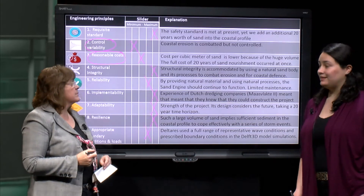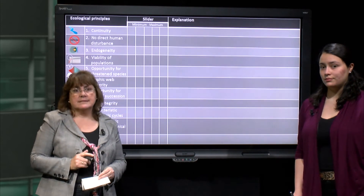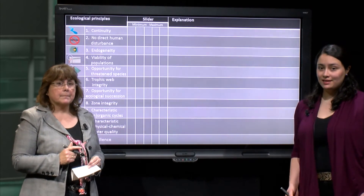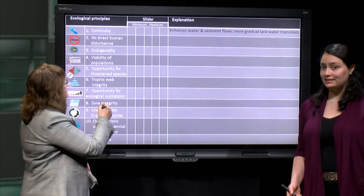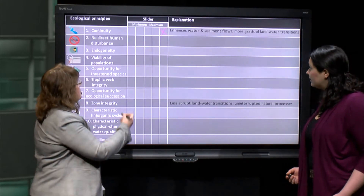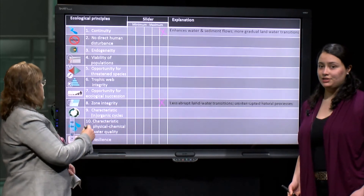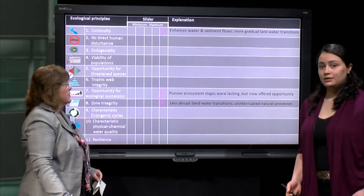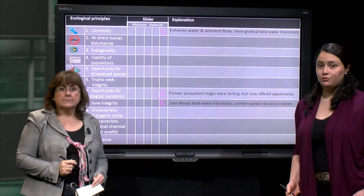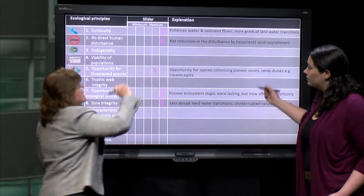What about the ecological design principles? Let's start with the principles associated with the provision of new physical habitats. The project enhances water and sediment flows and provides more gradual transitions between land and water, fulfilling the continuity principle and enhancing zone integrity — so we score both highly. It also facilitates the emergence of pioneer ecosystem stages, which are lacking along this stretch of the South Holland coast, and provides opportunities for threatened species such as the Sand Lizard, Lacerta agilis, which is red-listed in the Netherlands. The project also aims to reduce disturbance by recurrence of nourishment, fulfilling principle 2, and we score that at a maximum as well.